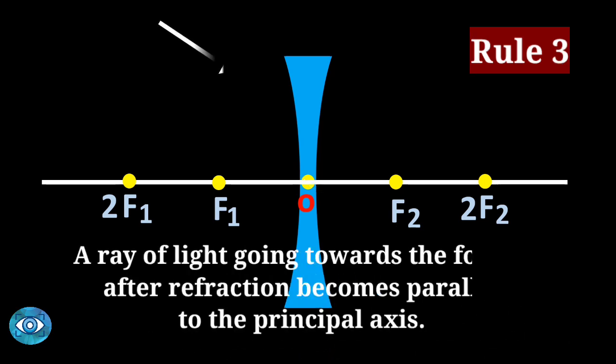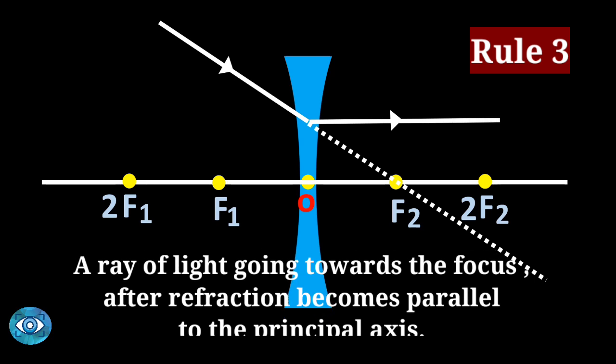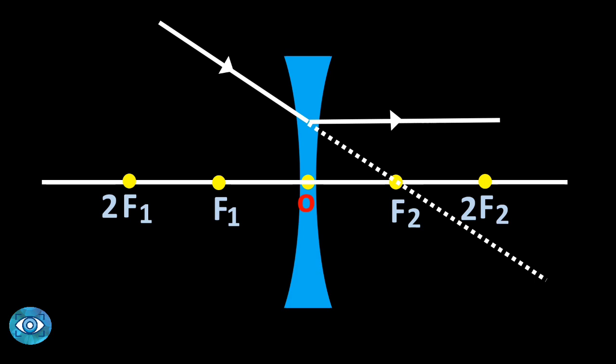Rule number three: a ray of light going towards the focus, after refraction, becomes parallel to the principal axis. Based on these three rules, let's find out the position and properties of the image.